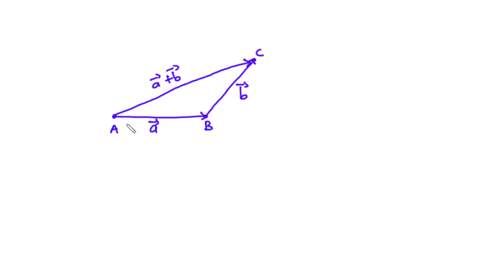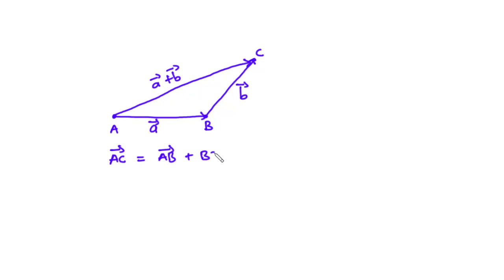So if you want to move from point A to point B through to point C, then it is the same as moving from point A through to point C. Thus, vector AC is equal to vector AB plus vector BC. Notice that the endpoint of vector A happens to be the starting point of vector B.